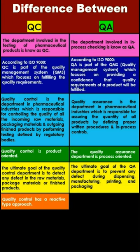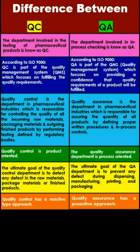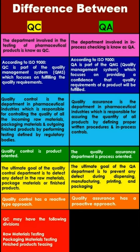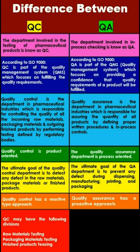Quality control has a reactive type approach, whereas quality assurance has a proactive approach. QC may have the following divisions: raw material testing, packing material testing, and finished product testing. QA may have the following divisions: IP-QC, IP-QA, and documentation.